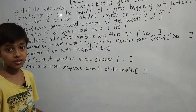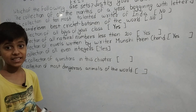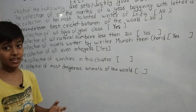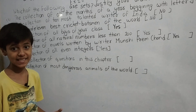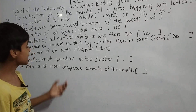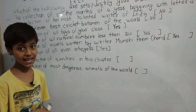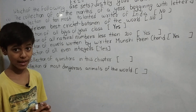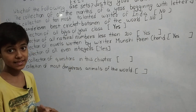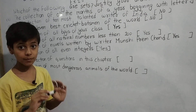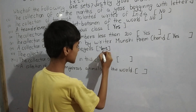Part (vii): The collection of all even integers — 2, 4, 6, 8, and so on up to infinity. If you ask me or any other person what the collection of all even integers is, we will both give the same answer from 2 to infinity. All terms are well defined, so this is also yes — a set.